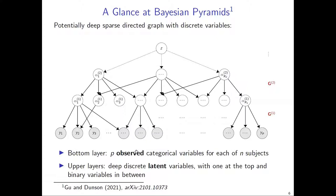In the bottom layer we can see gray nodes — these are observed responses for p random variables. All the deeper layers have white nodes, which are latent variables. We consider all the variables to be discrete.